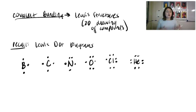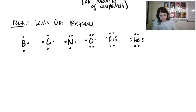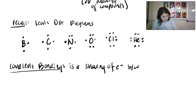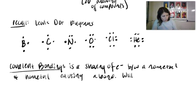Lewis dot diagrams are the first step in drawing Lewis structures. Whenever we come across a compound, for example H2O, we draw bonds between the atoms to show those bonds. Covalent bonding is a sharing of electrons between a non-metal and a non-metal, which causes a bond between those atoms and overall produces a neutral compound.